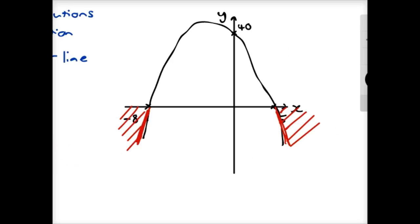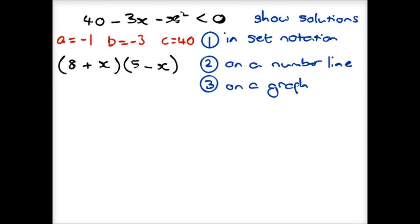So for part 1, where it says set notation, we want values of x which are less than negative 8. I'm using less than because this is less than rather than less than or equal to. And values of x where it is greater than 5.